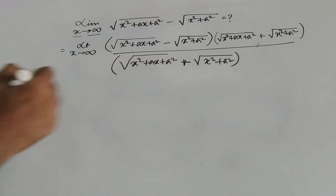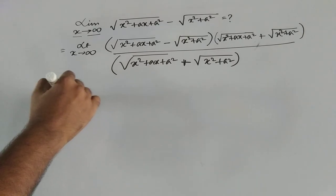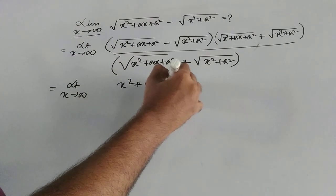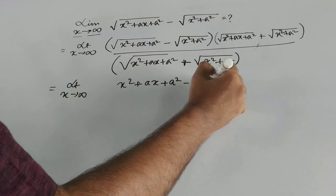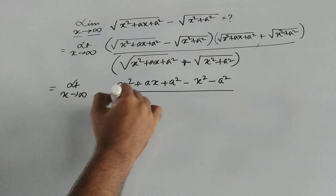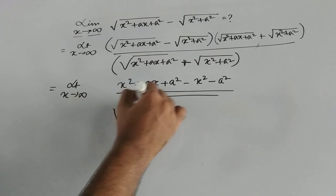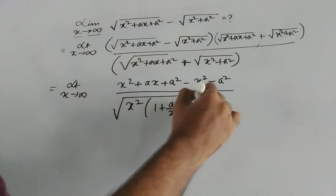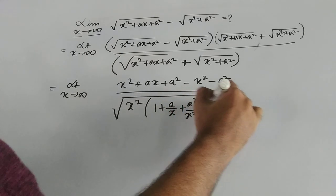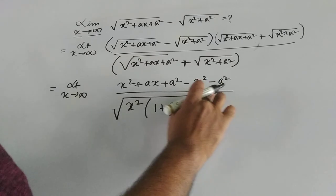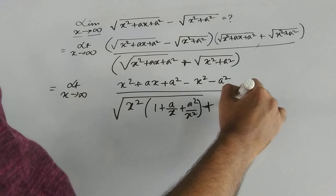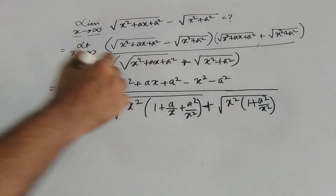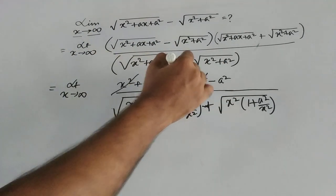This gives limit x tends to infinity of (a − b)(a + b) = a² − b², so the numerator becomes x² + ax + a² − x² − a². Taking x² common in the denominator under each square root gives √(x²(1 + a/x + a²/x²)) and √(x²(1 + a²/x²)). Now x² and x² cancel, and a² and a² cancel in the numerator.